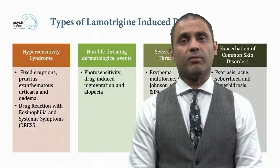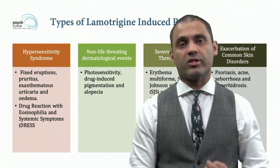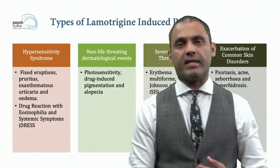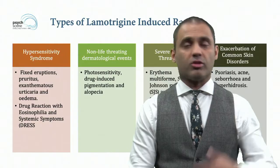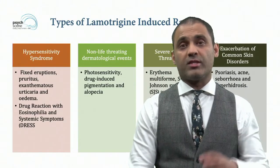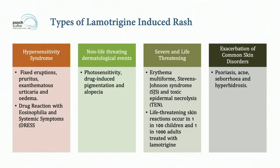The general types of Lamotrigine-induced rash include: hypersensitivity syndrome — fixed eruptions, pruritus, urticaria, edema, and the more serious DRESS (drug reaction with eosinophilia and systemic symptoms). Non-life-threatening events include photosensitivity, drug-induced pigmentation, and alopecia. Severe and life-threatening events include erythema multiforme, Stevens-Johnson syndrome, and toxic epidermal necrolysis. Life-threatening reactions occur in approximately 1 in 100 children and 1 in 1,000 adults treated with Lamotrigine. Lastly, exacerbation of common skin disorders such as psoriasis, acne, seborrhea, and hyperhidrosis.